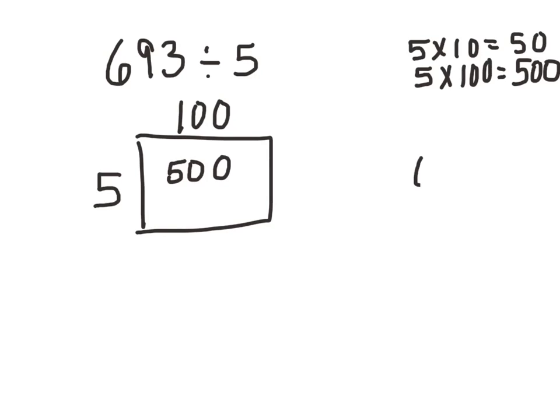So now I'm going to take my 693 that I am dividing by 5 and I'm going to subtract the 500 and see what I have left. I have 193 left.